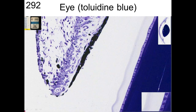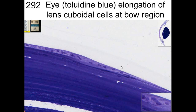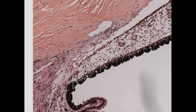In the iris, the pigmented epithelium is at the bottom, and the myoepithelium acts as the dilator muscle. The constrictor smooth muscle constricts the pupil. The lens has lens fibers running in the direction of light, with cuboidal cells on the anterior surface and a lens capsule. The posterior surface has no cuboidal cells. Blood vessels in the iris have continuous capillaries to help maintain the barrier. The cuboidal cells at the bow region become elongated to form the lens fibers.